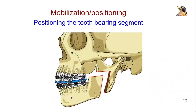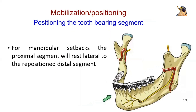Mandibular-maxillary fixation is performed to position the large tooth-bearing segment to the desired relationship with the maxilla. A prefabricated surgical splint or wafer may be used to facilitate this. For mandibular setbacks, the proximal segment will rest lateral to the repositioned distal segment.